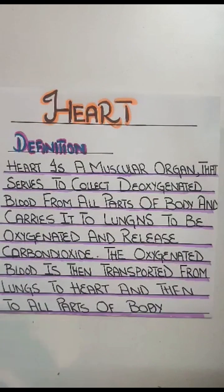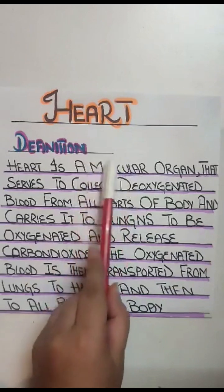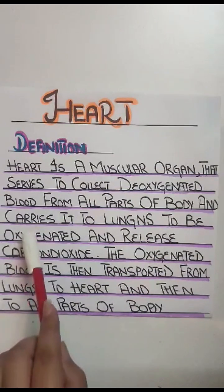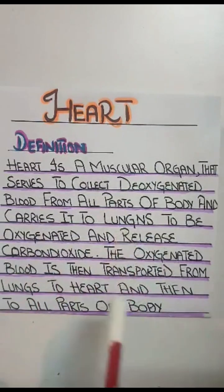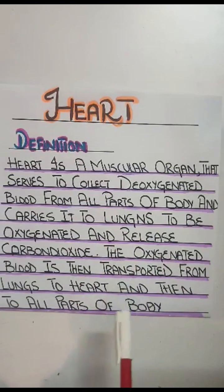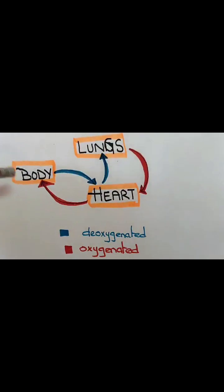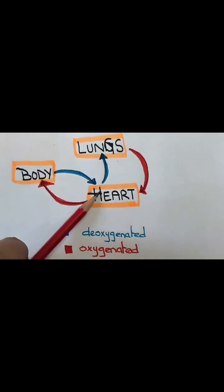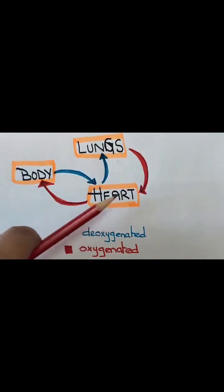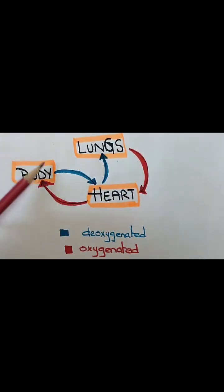The heart is defined as a muscular organ that serves to collect deoxygenated blood from all parts of the body and carries it to the lungs to be oxygenated and release carbon dioxide. This oxygenated blood is then transported from the lungs to the heart and then to all parts of the body. It's basically a cycle: body to heart, heart to lungs, lungs back to heart, and oxygenated blood back to the body — repeating with each heartbeat.